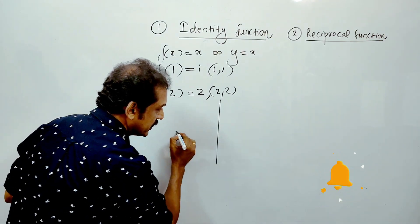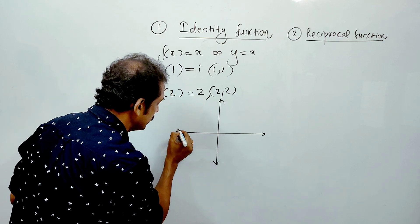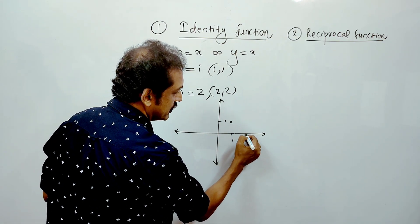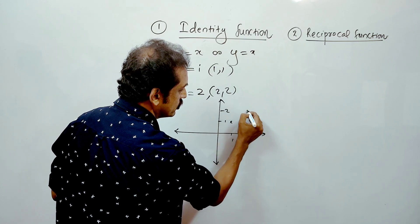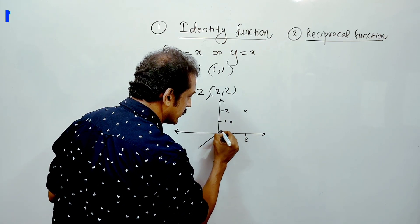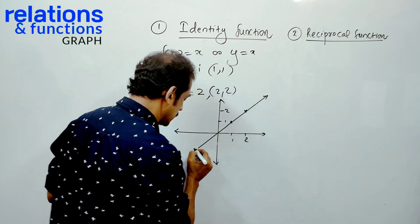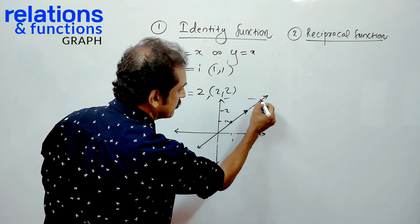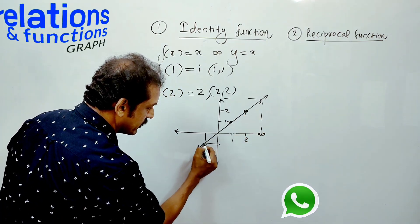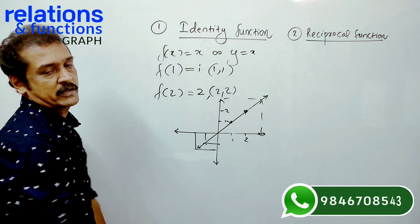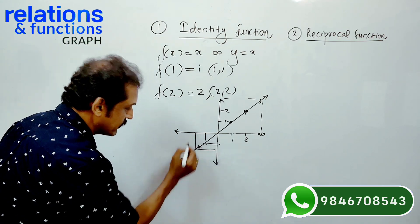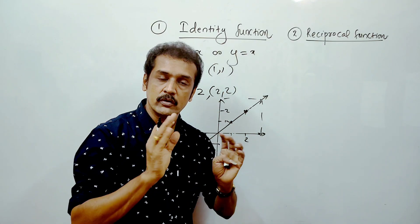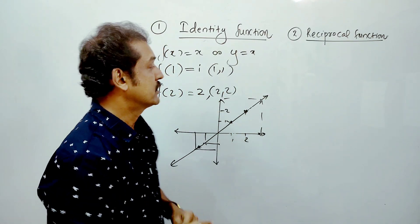We will show the graph of 1. x equals 1 equals 1, 2 equals 2. This is the graph. x equals 1, 2 equals 2, 3 equals 3, minus 1 equals minus 2. This is the identity function with two variables. f of x equals x, y equals x — it's the identity function. It's very important.